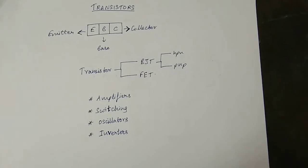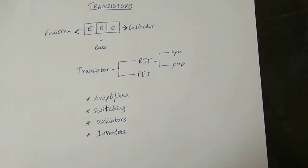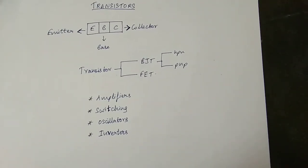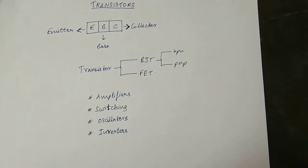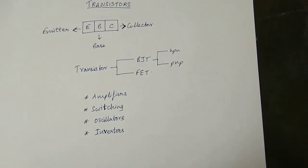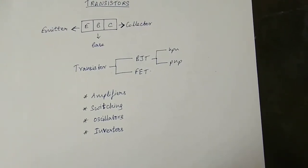The advantage of the transistor over a diode is that you can use it in amplifiers, switching circuits, oscillators, and also as an inverter — for example, in a MOSFET.